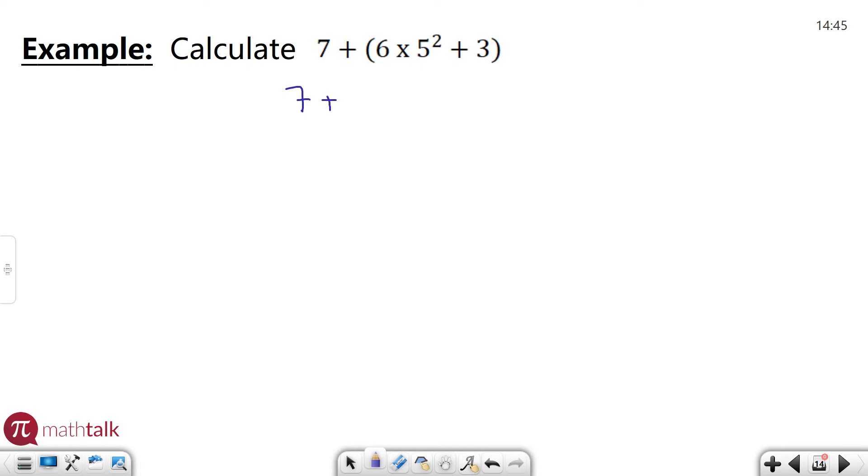So in parentheses we have six times five squared. After parentheses, the next order of operations is exponents. So you want to take care of that part of it first. So we have six times five squared is five times five which is 25, and then plus three.